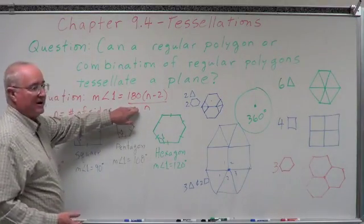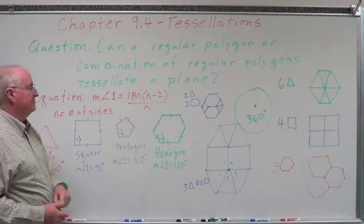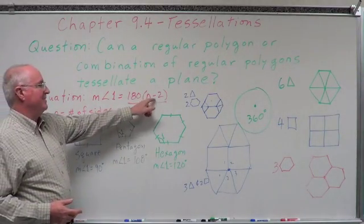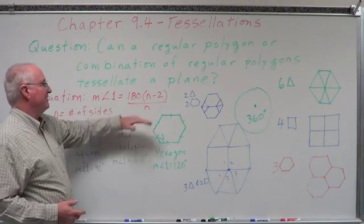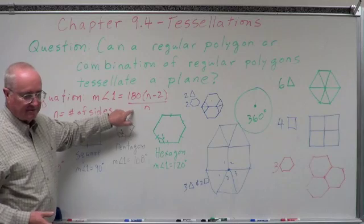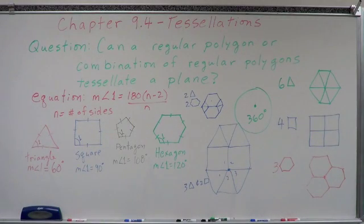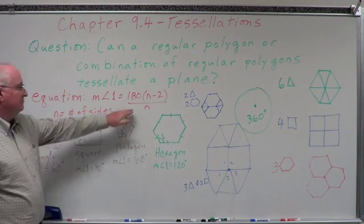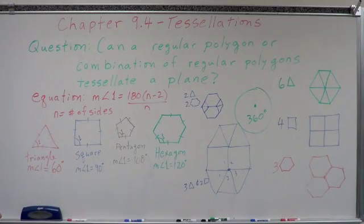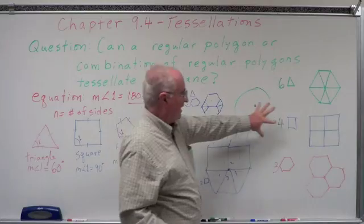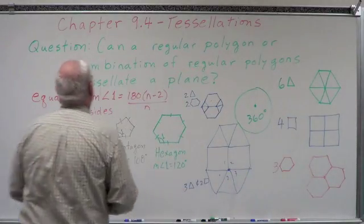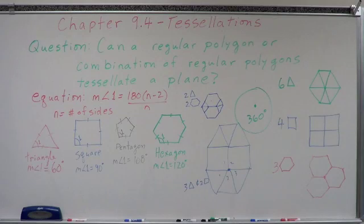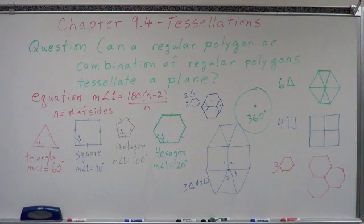How do we find that interior angle? Right here: 180 times the quantity (n minus 2), all divided by n, where n is the number of sides. We'll use that formula quite a bit the rest of the year — get it down, know it, understand it. That's how you figure out how to tessellate a plane. Welcome to tessellations — this is how grandma figured out how to make a quilt. She did it by piecemeal; we're doing it by mathematics.